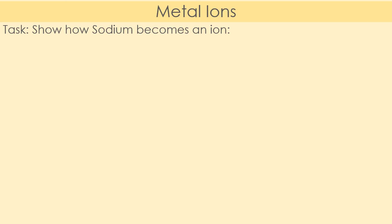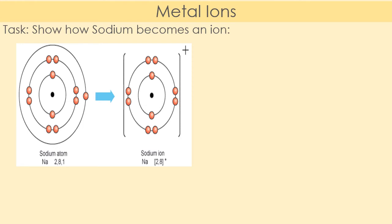Welcome back — you should have completed the task and drawn a diagram that looks something like this. We have a sodium atom with one electron in the outer shell. We have the electron configuration of 2, 8, 1 — so one electron in the outer shell. When it becomes an ion it will lose that outermost electron, giving us a first shell with two electrons and the next shell with eight electrons.